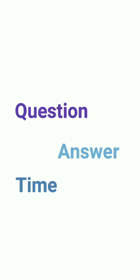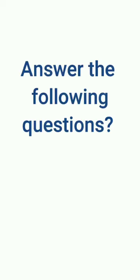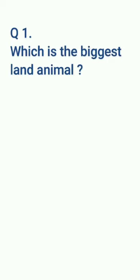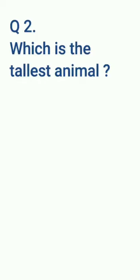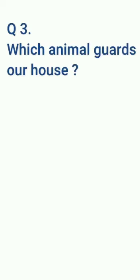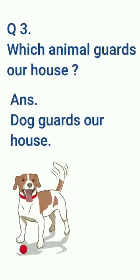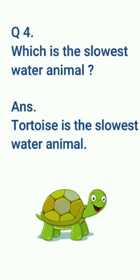Children, are you ready for learning the general questions from the topic? Let's learn. First, answer the following questions. Question number one: which is the biggest land animal? Answer: elephant is the biggest land animal. Question number two: which is the tallest animal? Answer: giraffe is the tallest animal. Question number three: which animal guards our house? Answer: dog guards our house. Question number four: which is the slowest water animal? Answer: tortoise is the slowest water animal.